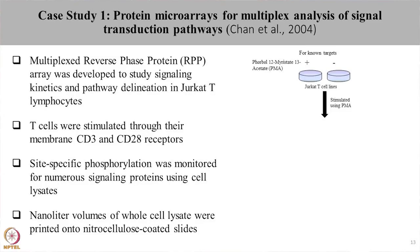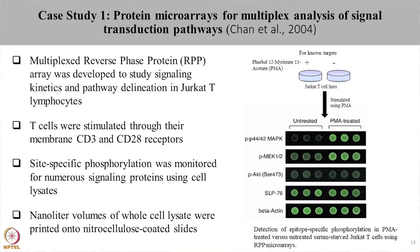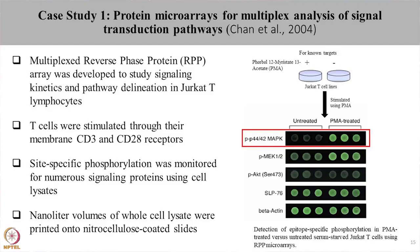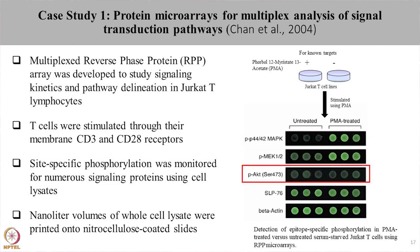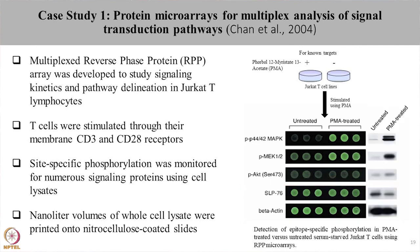PMA is Phorbol-12-Myristate-13-Acetate. PMA activates protein kinase C, which once activated leads to phosphorylation of MAPK and MEK proteins. Cell lysates were taken and imprinted in triplicates for untreated as well as PMA-treated cell lines, and phosphorylation was studied using phospho-antibodies. MAPK showed strong phosphorylation upon PMA treatment while untreated cells showed none. AKT, which is not a target of protein kinase C, showed no change. SLP-76 and beta-actin were used as controls. The same was verified using Western blot.